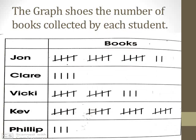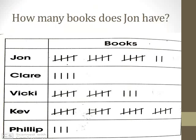Let's come to the exercise now. The chart shows the number of books collected by each student — John, Claire, Vicky, Kevin, and Philip each have some books. The first question is: how many books does John have? Whenever a diagonal line is struck over four lines, that means five. There are three fives for John: five, ten, fifteen, and then two single lines, so it becomes seventeen. John has seventeen books.